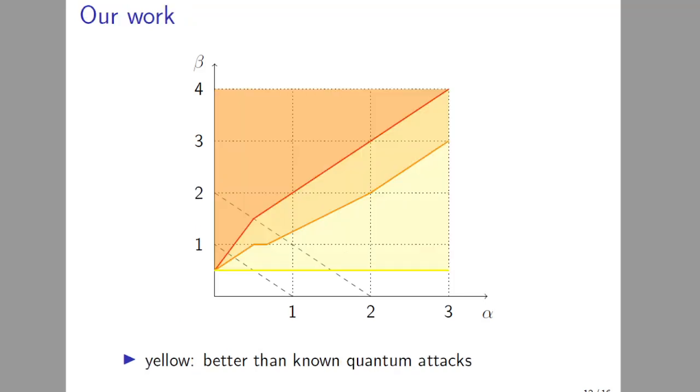And now our work: you can see we have a much larger portion of the parameter space covered here. Red line and above is polynomial-time attacks, orange line and above is better than generic attacks, and we have a new line here, which is the yellow line, which is better than known quantum attacks. And as you can see now, certain SIDH and B-SIDH-like choices are now affected by our attacks.